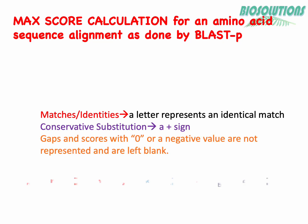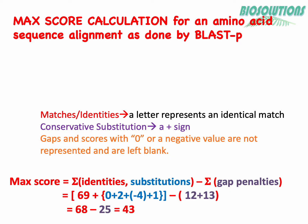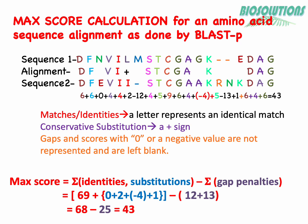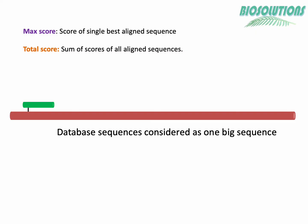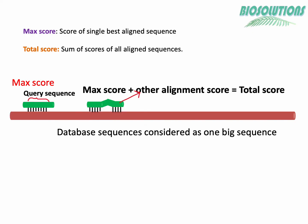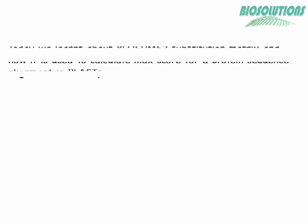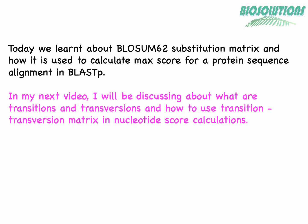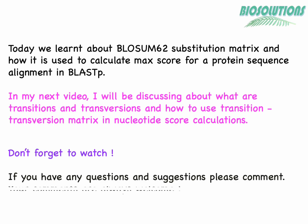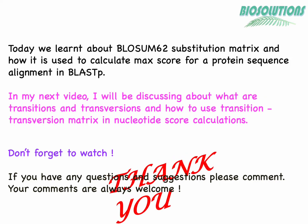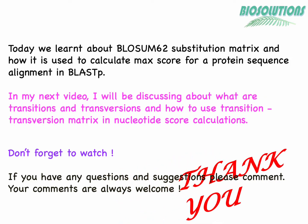BLAST-p then adds gap cost values to match and substitution scores to get max scores. A max score is the score of the single best aligned sequence, whereas the total score is the sum of scores of all alignment sequences. I have explained these two scores and their calculation in my earlier videos on BLAST-n and BLAST-p — links are in the description. In my next video, I'll be discussing transitions and transversions and how to use a transition-transversion matrix in nucleotide score calculation. See you soon, thank you very much.